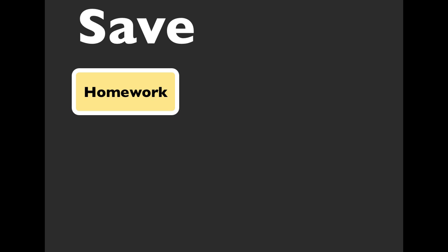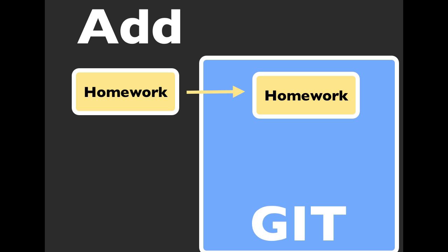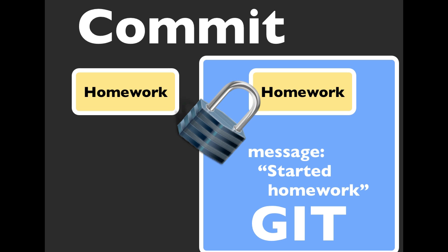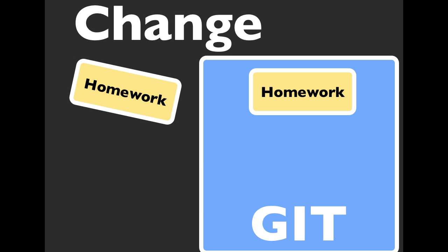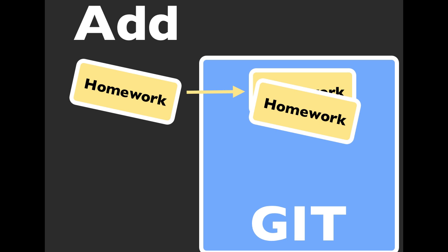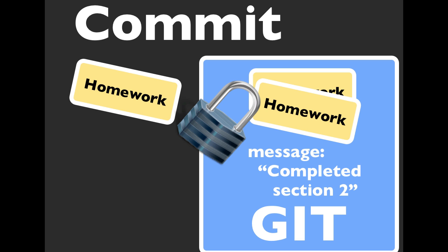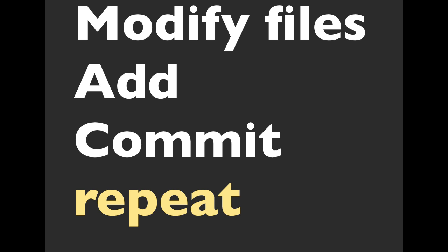Previously we showed you this workflow: you're going to save a document, add it to your Git repository, then commit it — this is going to lock it down. When you do this, you also provide a message. You might then change that document, add that change to Git, it keeps a reference of both changes, and again commit it with another message — like 'completed section two.' The general theme is: modify files, add them to the repository, commit, and then repeat as necessary. Typically, anytime you make large changes or move to a different section, you want to break those out into small atomic commits.